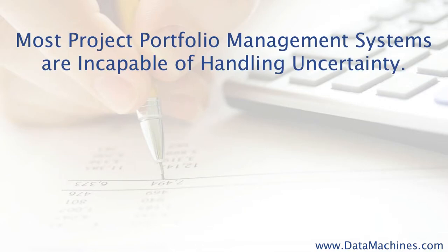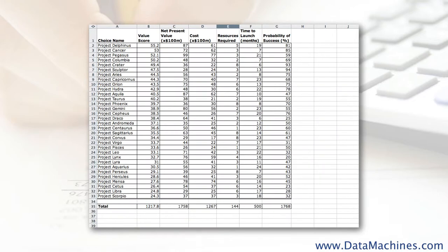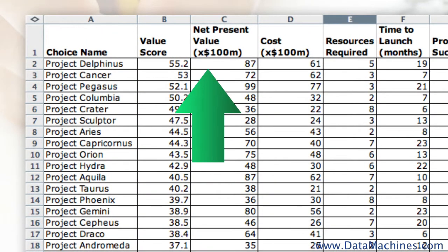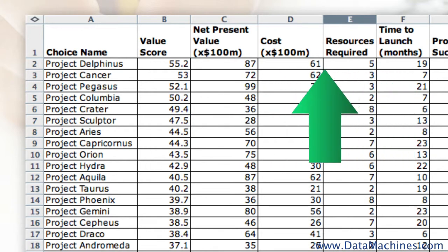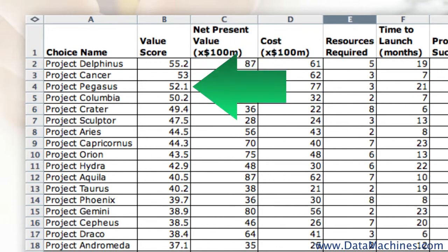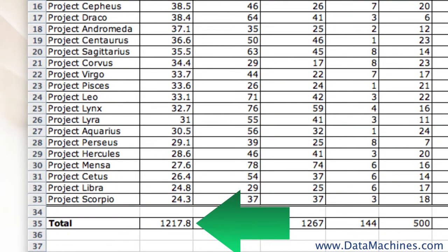However, most project portfolio models are incapable of handling this uncertainty and therefore yield skewed and unrealistic project valuation and do not serve as good foundations for making project portfolio selections. Take, for example, a typical spreadsheet type of project portfolio that has a list of projects with single values assigned to the various attributes. When these projects are scored, they also yield a single value, and then, when the portfolio is valued, it becomes a single sum of the different value scores.